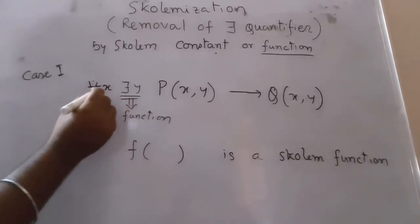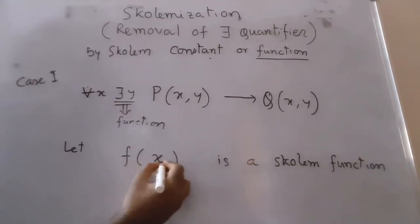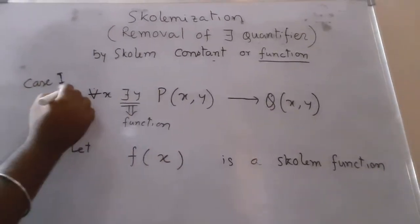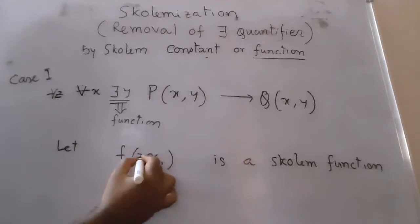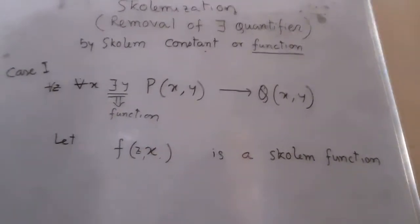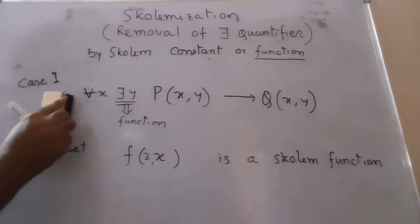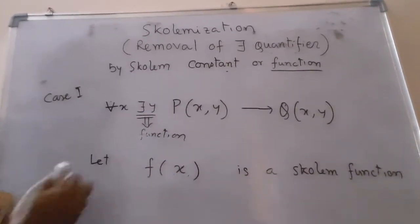If there are other variables, say for example z, then we will write f(z,x). But in this case, there is only one variable, so we will use f(x).